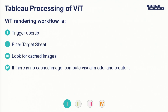What's the workflow of rendering a viz in tooltip? First, Tableau renders the ubertip — the default tooltip with text and the option to filter on the dimension. Then it filters the target sheet. It looks for a cached image to see if one already exists. If not, it draws the visual model and creates the PNG. So this does have some performance implications, which we'll cover at the end.